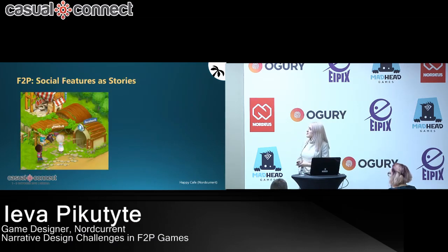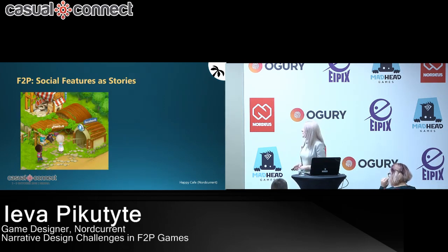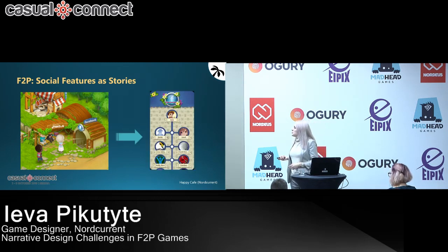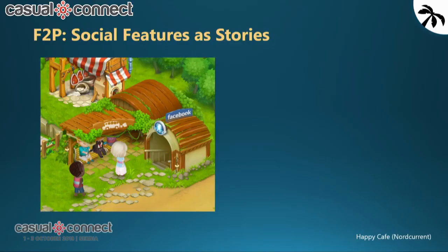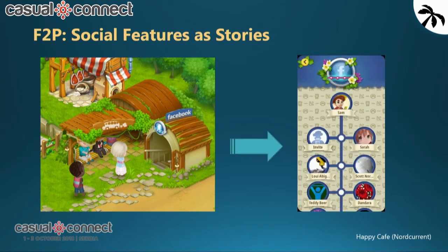Social features can also be integrated into the game's world instead of being hidden under a settings screen. Here in Happy Cafe 2, players can visit their friends' cafes through the subway system, which is conveniently placed where NPC characters arrive and depart to and from the cafe. When you tap this, the UI style also reinforces the narrative theme. Think of how you can integrate these features naturally into your game world.